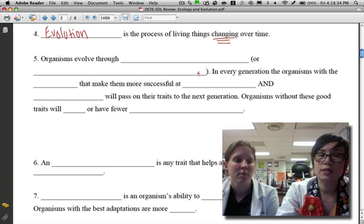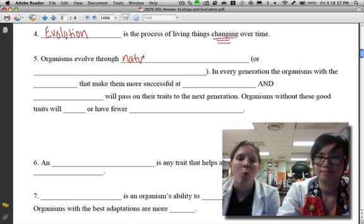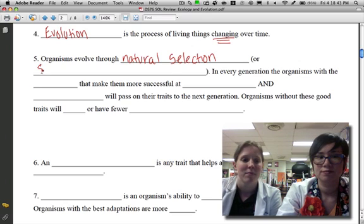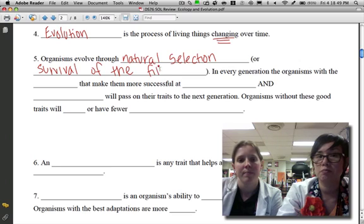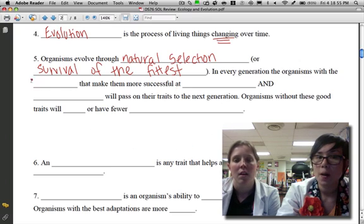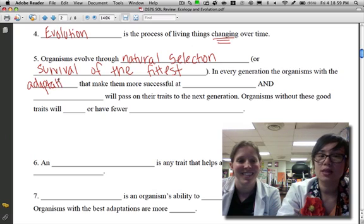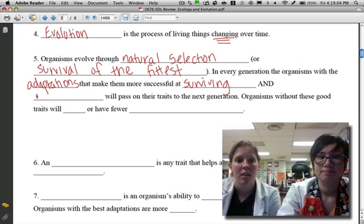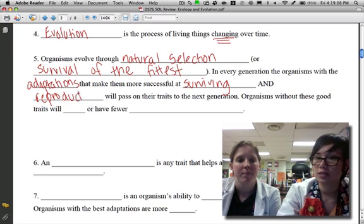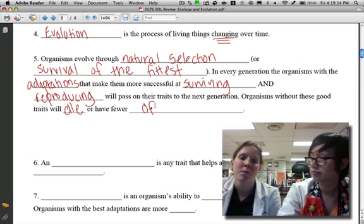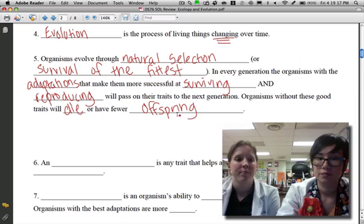Number five: organisms evolve through natural selection, or another word for that is survival of the fittest. This explains how populations can change over time, which is evolution. In every generation, the organisms with the adaptations that make them more successful at surviving and reproducing will pass on their traits to the next generation, and that's important. Organisms without these traits will die or have fewer offspring.